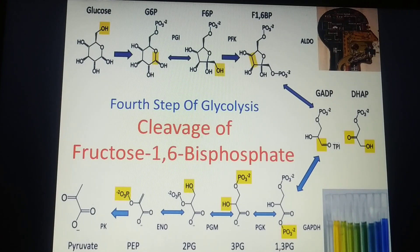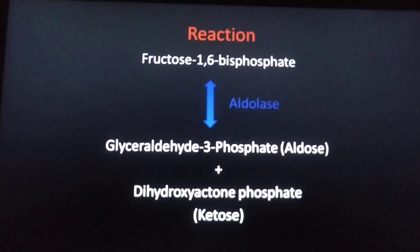In this reaction, the fructose-1,6-bisphosphate in the presence of enzyme aldolase cleaves into glyceraldehyde 3-phosphate, which is a phosphorylated aldose sugar, and dihydroxyacetone phosphate, which is a phosphorylated keto sugar. As there is very small difference in the Gibbs free energy of reactant and product, this is a reversible type of reaction.